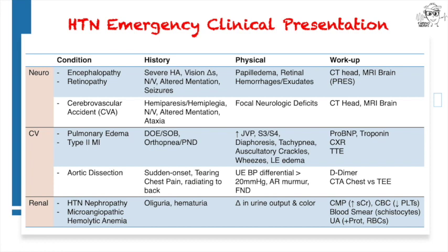When you do a fundoscopic exam, you'll be able to see papilledema and retinal hemorrhages as well as exudates. You'll also be able to see papilledema if you do an ultrasound of the eye. When working this up, you'll be able to see white matter edema on CT head or, more sensitively, MRI brain. This white matter edema on the posterior cerebral hemispheres is what constitutes posterior reversible encephalopathy syndrome, or PRES.